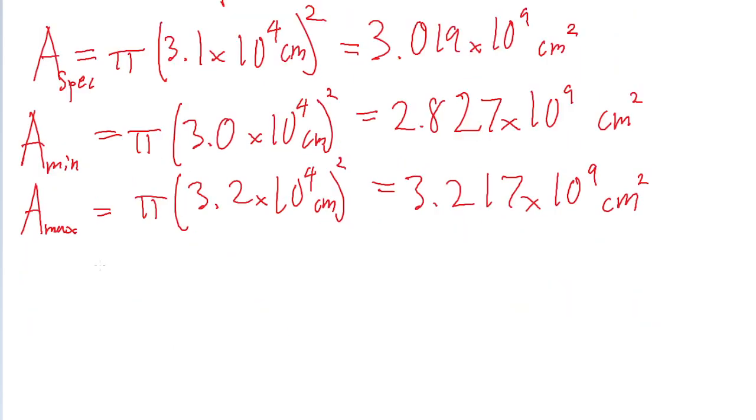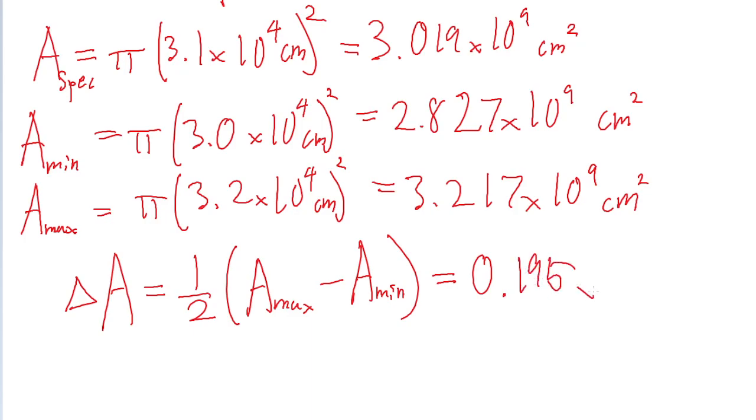So the value we're going to use for the area's uncertainty, we'll take into account both the min and max values. So we'll kind of find an average, where we'll take the maximum area, subtract the minimum area, and then divide it by 2. So we'll put in 3.217 times 10 to the power of 9 for a max, and 2.827 times 10 to the power of 9 for a min. And if we do that, we find an uncertainty of area of 0.195 times 10 to the power of 9 centimeters squared.